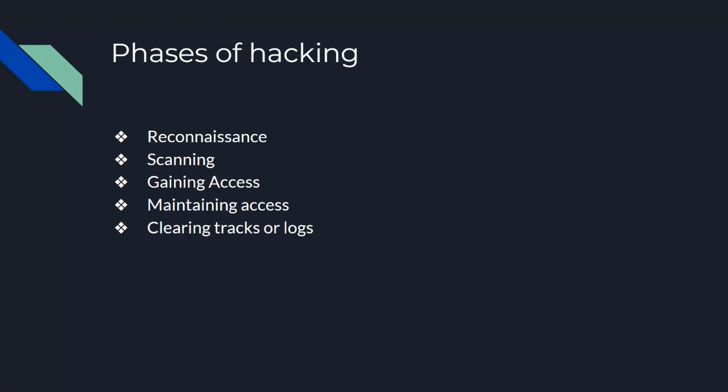The main topic is that there are 5 phases of hacking: Reconnaissance, Scanning, Gaining Access, Maintaining Access, and Clearing Tracks or Logs. In these 5 phases, if you are a hacker or an ethical hacker, you will follow this sequence — phase 1, phase 2, phase 3, phase 4, phase 5. There is a sequence you must follow.